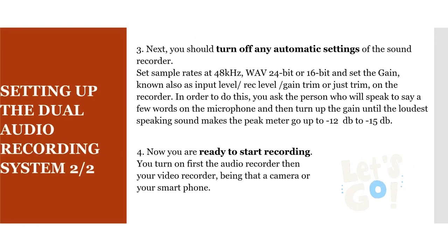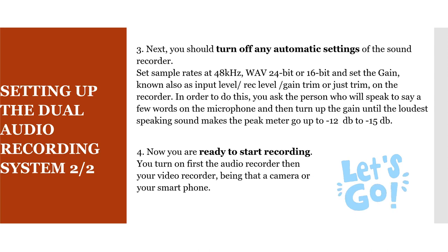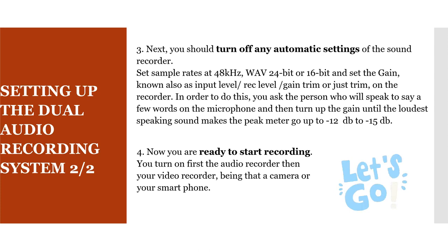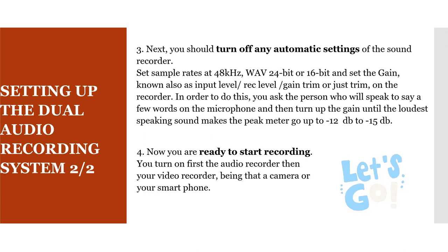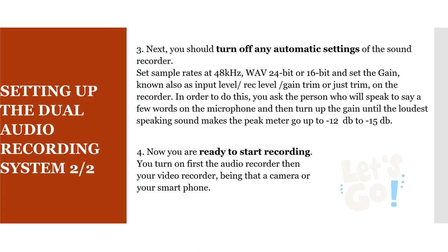Next, you should turn off any automatic settings of the sound recorder. Set sample rates at 48 kHz, wave 24-bit or 16-bit — there is little difference in the quality of the recorded sound. Then set the gain, known also as input level, rec level, gain trim, or trim, on the recorder. In order to do this, you ask the person who will speak to say a few words on the microphone and then turn up the gain until the loudest speaking sound makes the peak meter go up to minus 12 dB to minus 15 dB.